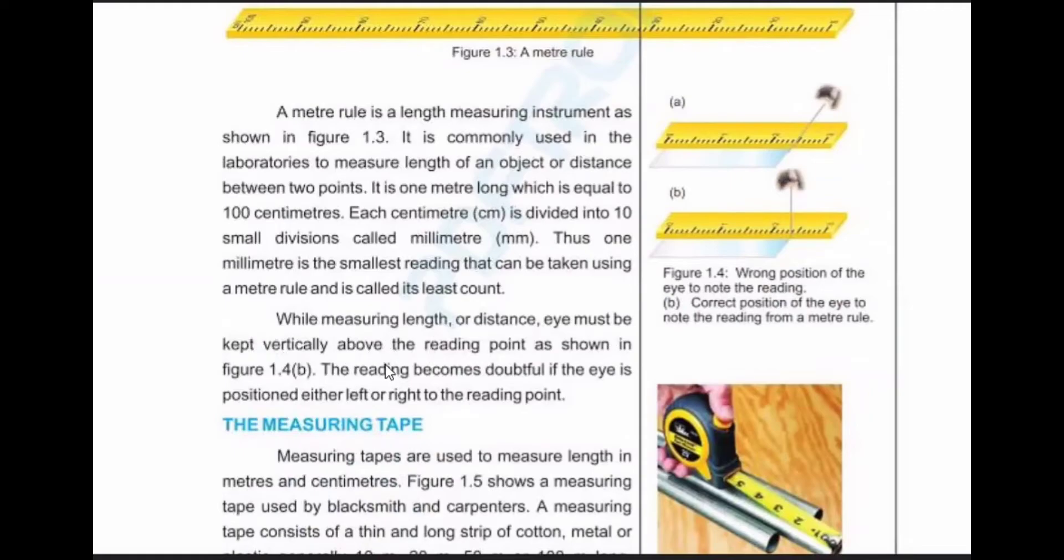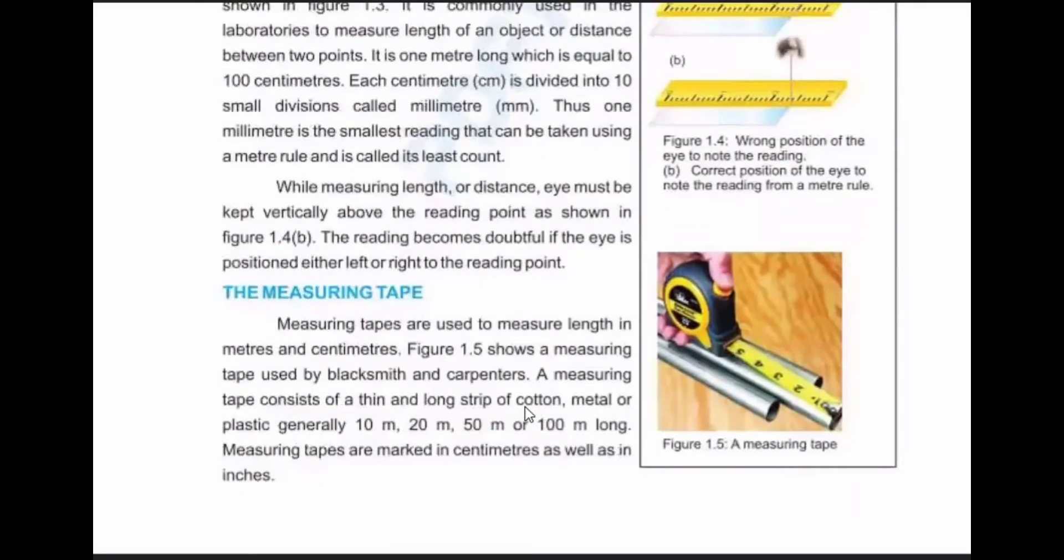While measuring length or distance, the eye must be kept vertically above the reading point as shown in the figure. The reading becomes doubtful if the eye is pointed either left or right to the reading point.